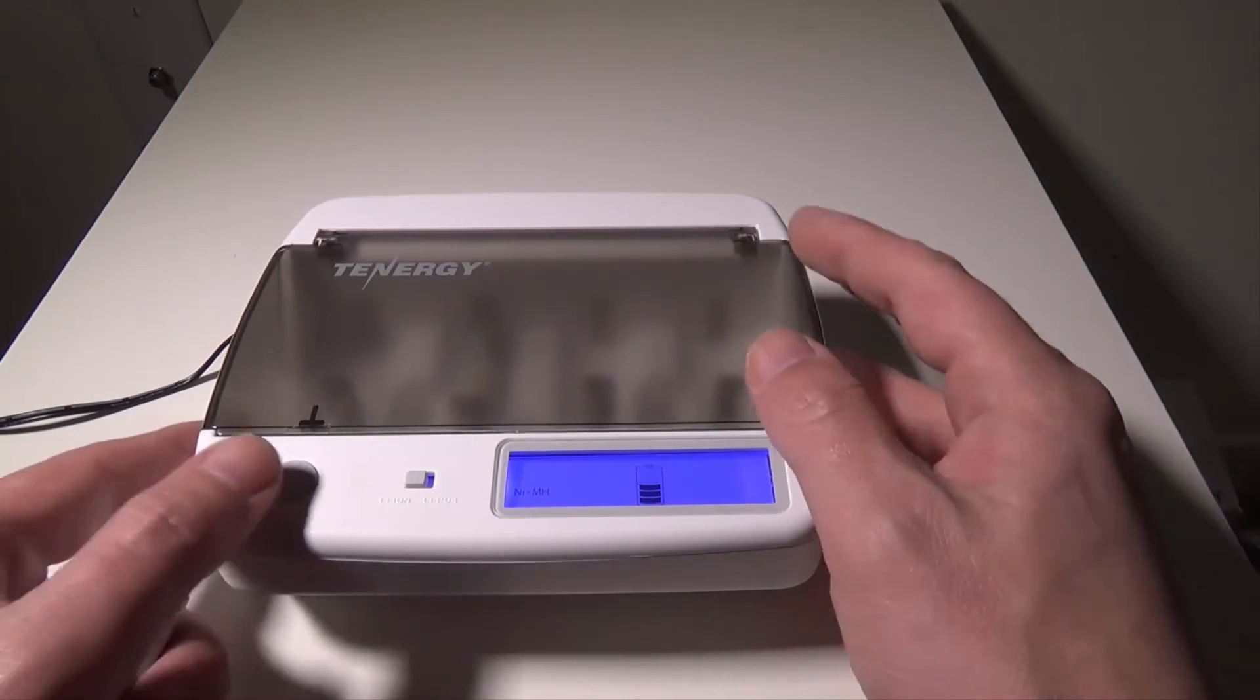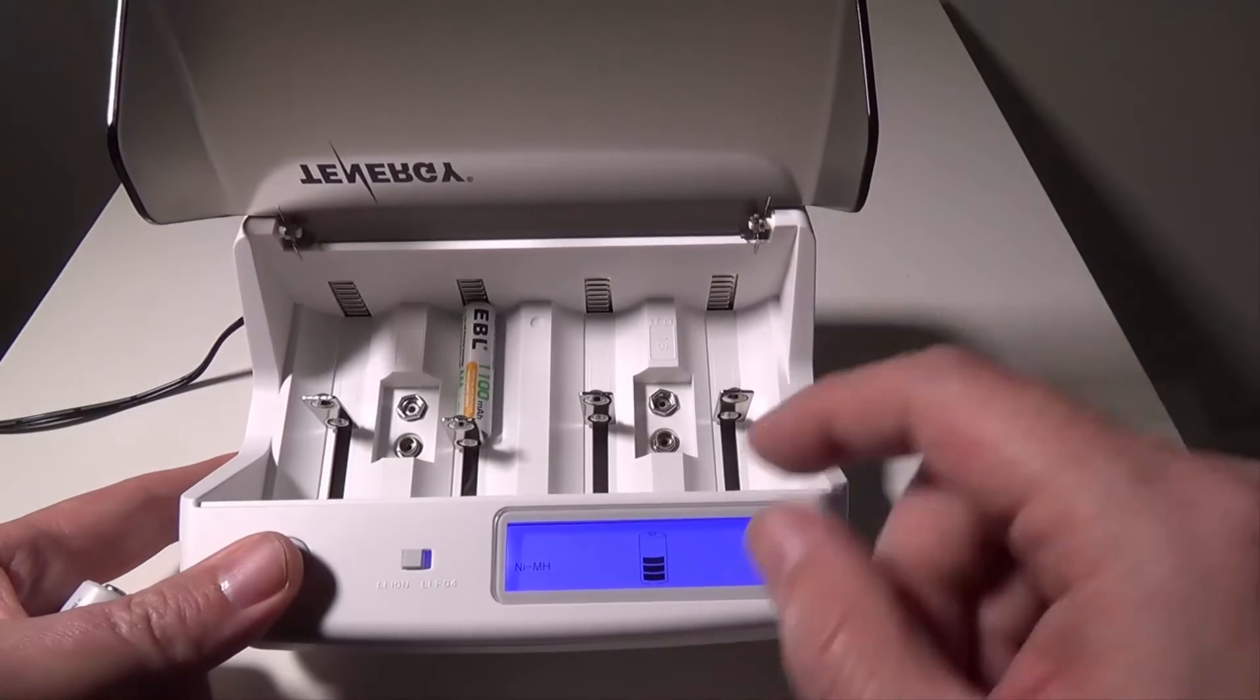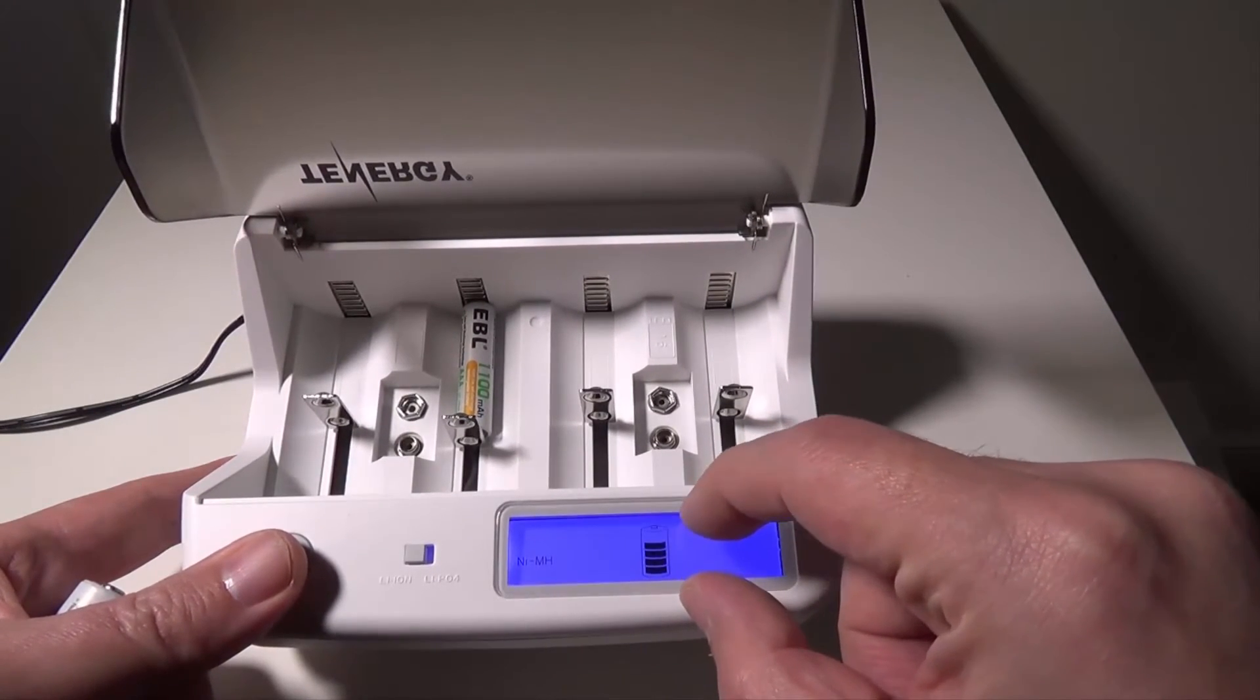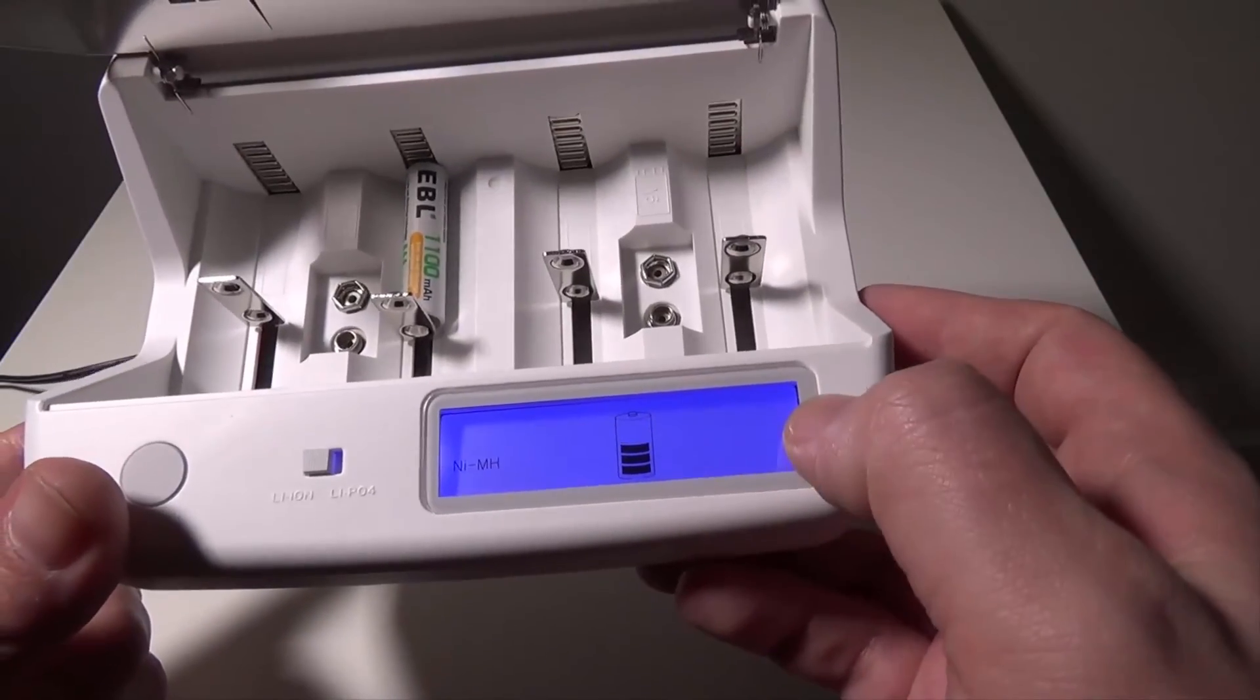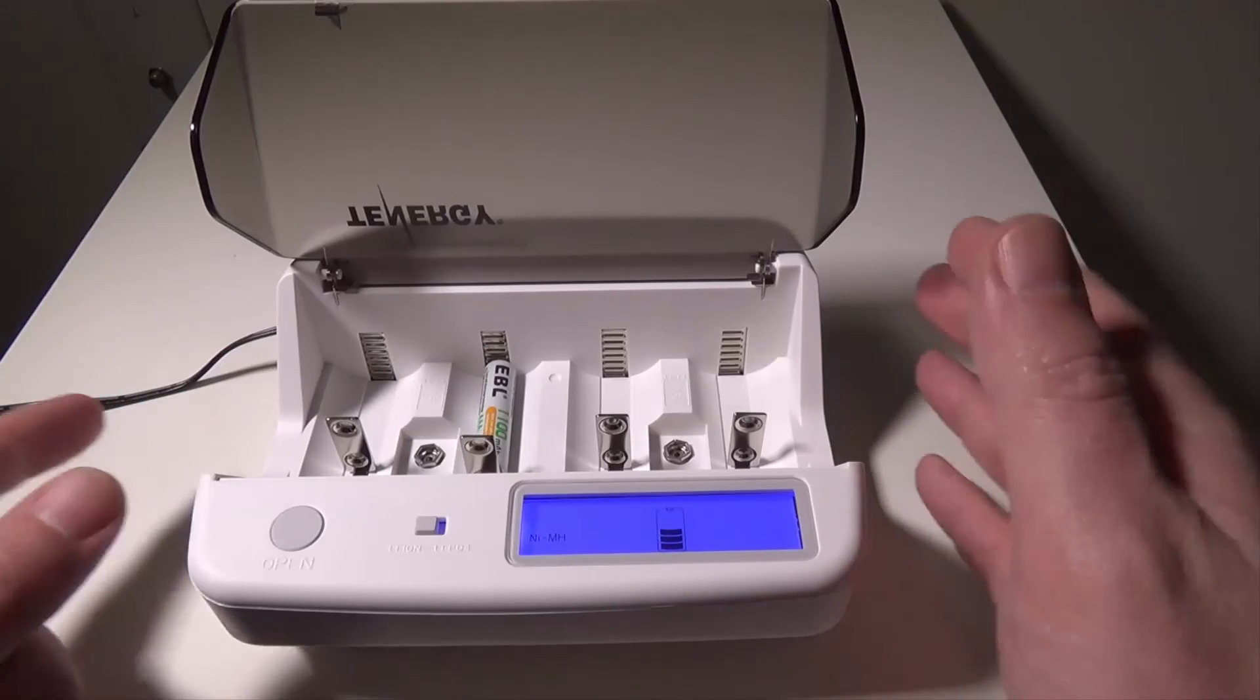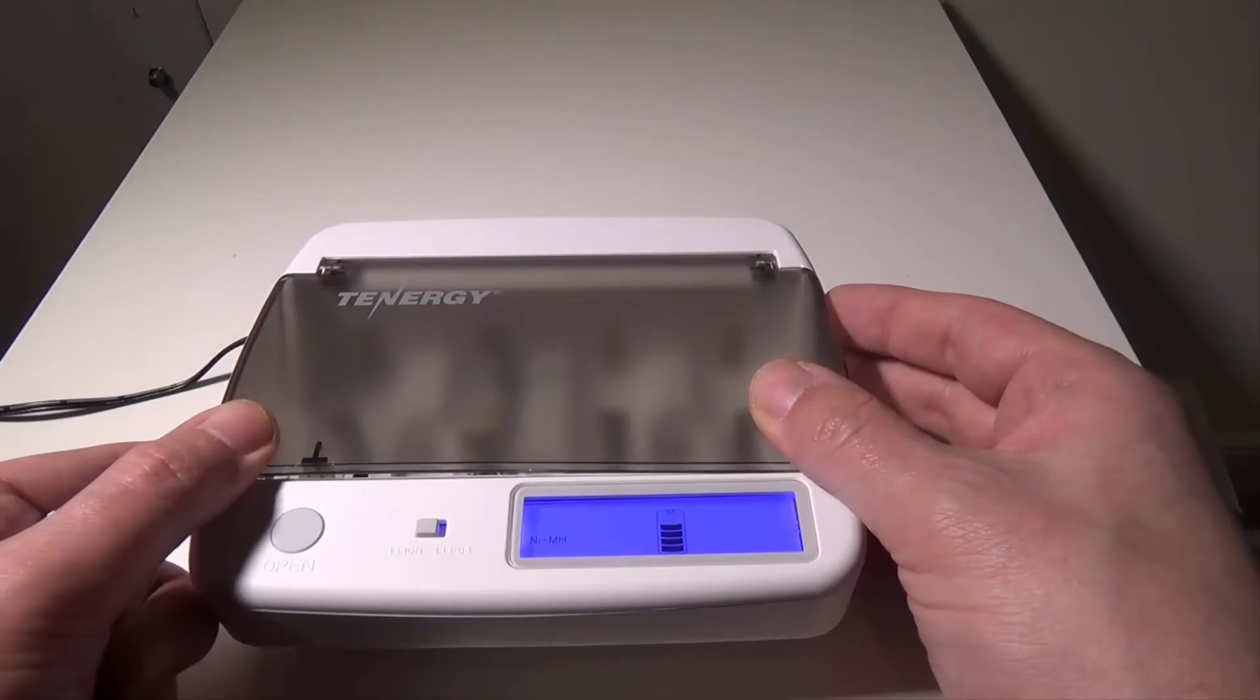When you do a 9-volt battery - and unfortunately I don't have a 9-volt rechargeable here to test - it'll come up instead of a cylinder type, it'll come up with a square 9-volt that looks exactly like this except for just the shape of it's different. You'll get the lines going up and everything. This is a good charger overall - solidly built, very versatile. Tenergy did a great job on this.